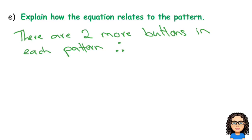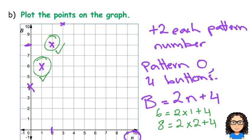So, there are 2 more buttons in each pattern. Therefore, B equals 2n. That's the 2.